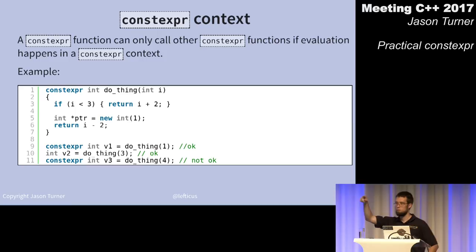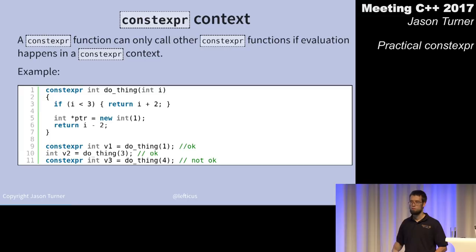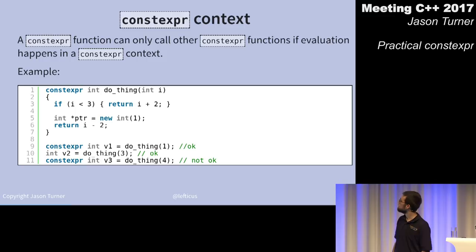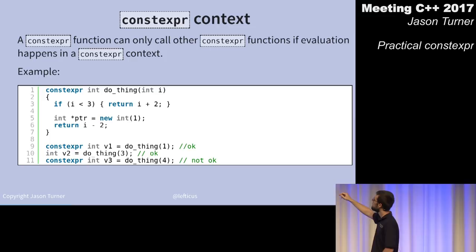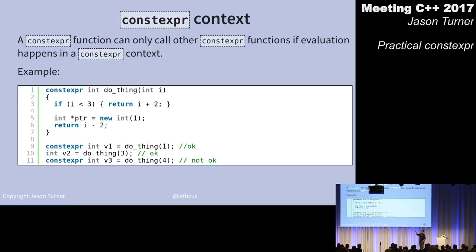If i is less than 3 we return i+2. If i equals 3, it falls through and does a new allocation on line 5. That's okay on line 10 because it happens in a non-constexpr context; it is not okay on line 11 because it's trying to do it in a constexpr context.